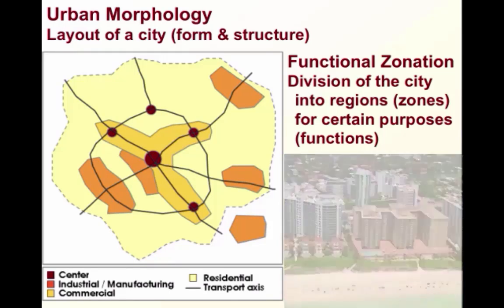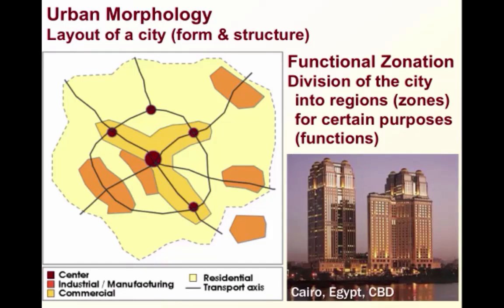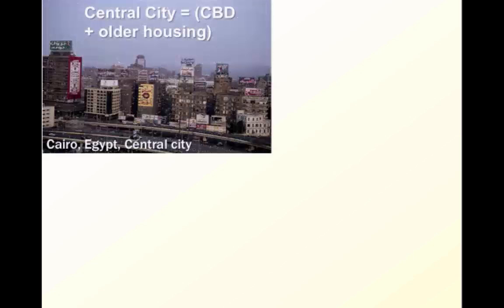A specific kind of zone we can look at is the CBD, or what's called the Central Business District. That is the economic, commercial, and sometimes even the geographic heart of a city — what people often call the downtown area. Another kind of place is the central city, which is the CBD and the older housing, so the original part of a city.